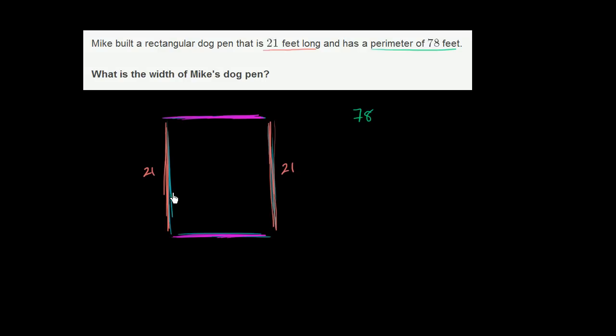So let's think about how we figure out the perimeter. If we add this distance, 21 feet, to this distance, the width, plus 21 feet to the width again, we're going to get to 78 feet. So one way to back into what the width is is to say, well look, if we sum up all of these lengths,